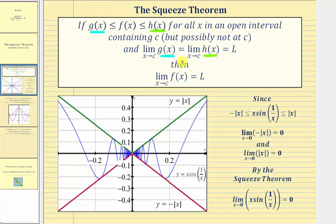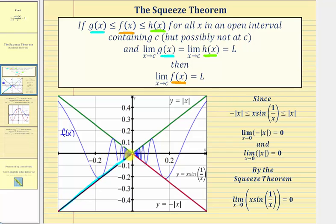then it follows the limit as x approaches c of f of x — this function here in the middle — also equals L. Looking at this graphically, our function f of x would be this blue function here in the middle, g of x would be this function here that's equal to or below f of x, and h of x would be this top function here that's equal to or above f of x.